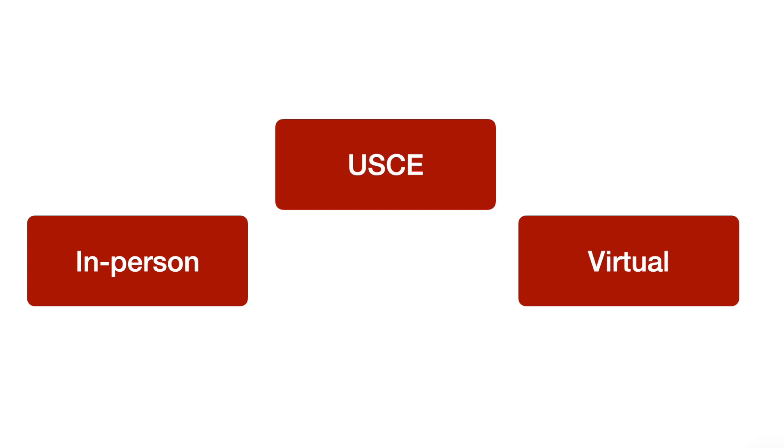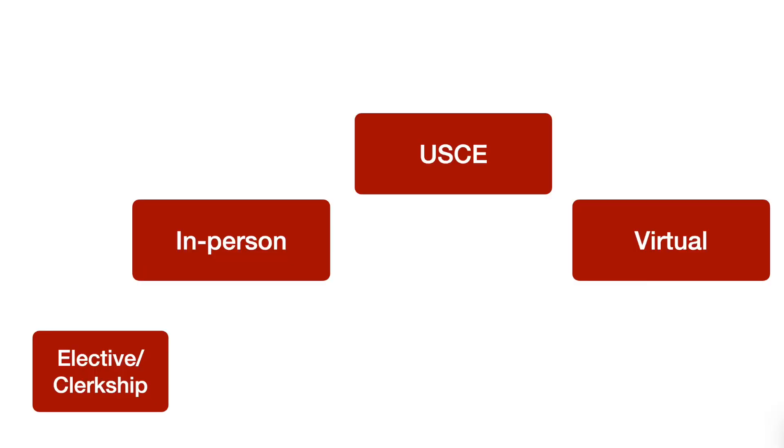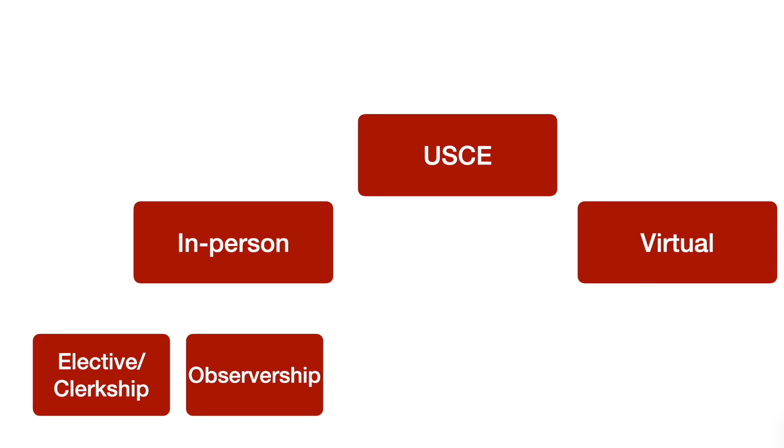US clinical experience can be of two major types: in-person rotations and tele-rotations. Before the pandemic, all rotations were in-person, but due to travel bans and visa difficulties, tele-rotations started gaining popularity. For in-person rotations, there are basically three types: an elective or clerkship, an observership, or an externship.